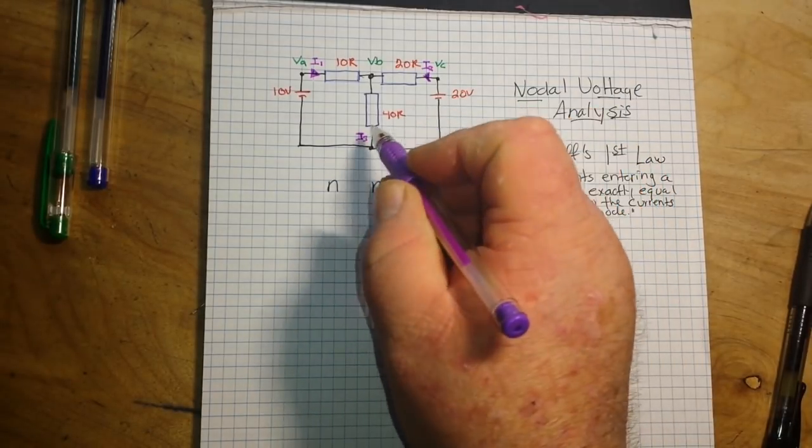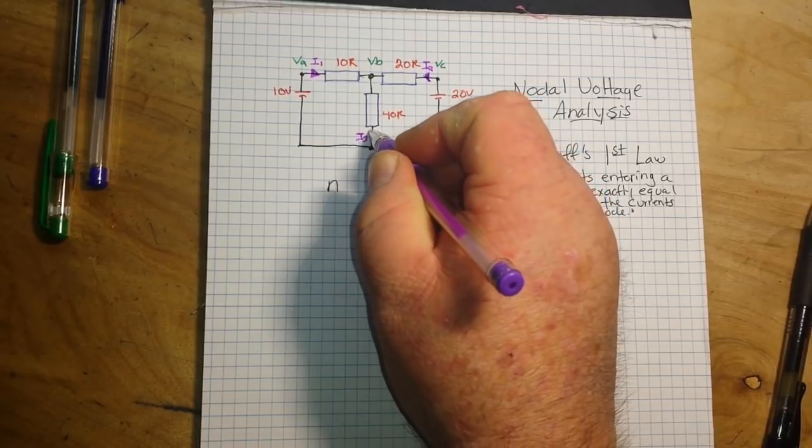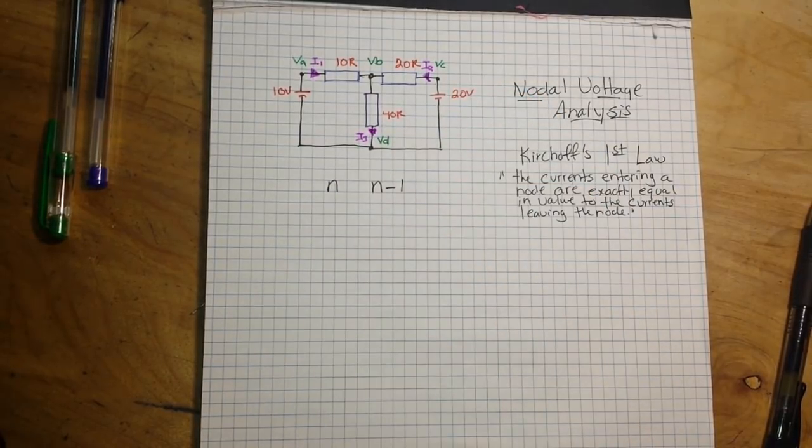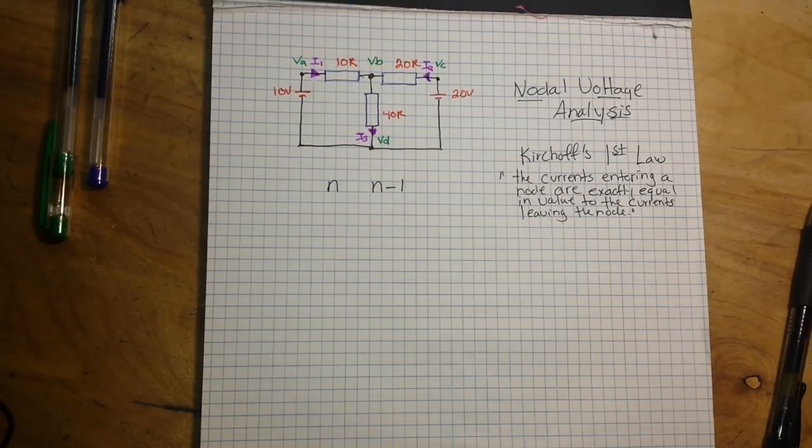This is negative. We know current flows towards the negative. So we know that direction. So now that we know all of the directions, we can carry on with our analysis.